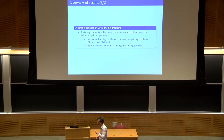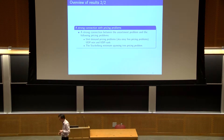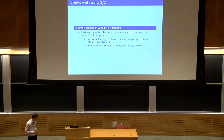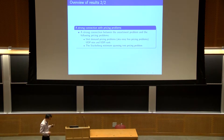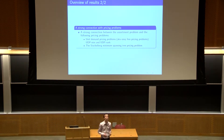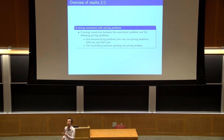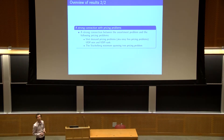That's the first contribution. The second one is to connect two different literatures: one is assortment optimization, mainly in operations research, and the other is pricing, specifically UDP mean and UDP rank, which is more in the computer science area. We show that these problems can be converted into an assortment problem, and therefore, once seen as a special case of the assortment problem, we can derive some of these bounds back and also obtain some new ones. We also do this for the Steiner minimum spanning tree pricing problem.